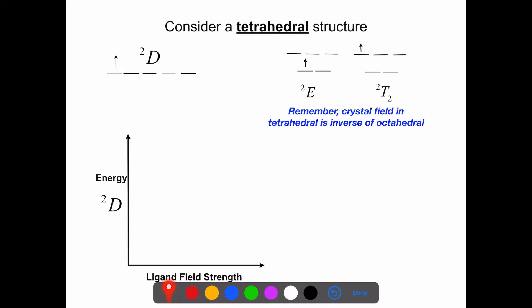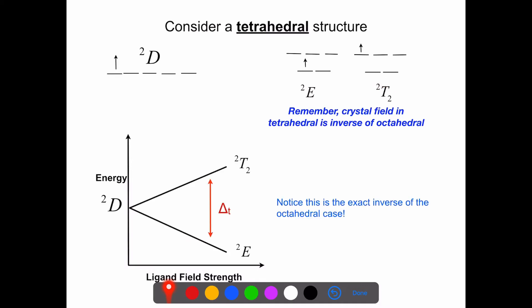We can jump ahead to a D1 tetrahedral system. Going from octahedral to tetrahedral, we think about the symmetry labels involved. For the crystal field diagram of a tetrahedral system, the EG set is lower in energy and the T2 set is higher in energy. Within this system, the ground state is called doublet E, and the excited state is doublet T2. Our correlation diagram shows delta T, with the ground state doublet E going to the doublet T2. One thing to note is this is the inverse of the octahedral case, which will be useful as we continue.